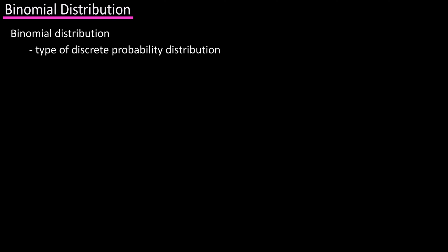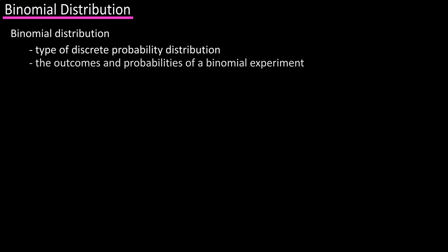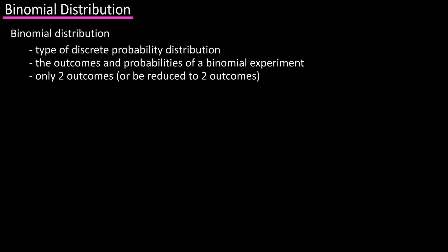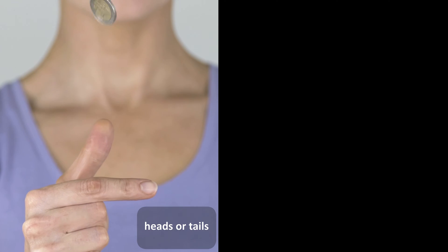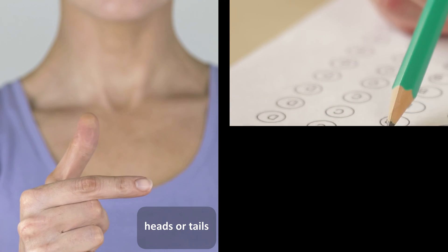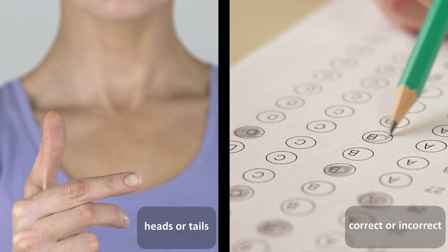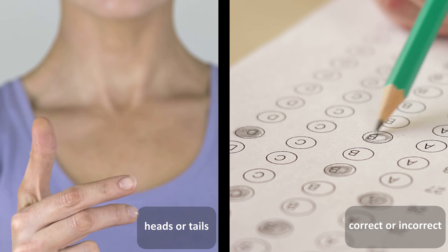The binomial distribution, which is a type of discrete probability distribution, consists of the probabilities of the outcomes of a binomial experiment. These experiments come from probability problems that have only two outcomes, or can be reduced to two outcomes. For instance, a coin flip can be either a head or a tail, and on a test, a multiple choice question can be reduced to correct or incorrect.